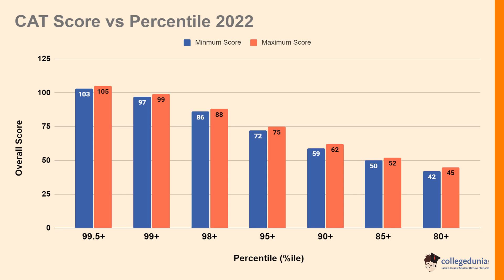Let's check the CAT score versus percentile in 2022. For the 99.5+ percentile, the minimum score was 103 and the maximum score was 105. For the 99+ percentile, the minimum score was 97 and the maximum score was 99. For the 98+ percentile, the minimum score was 86 and the maximum score was 88. For the 95+ percentile, the minimum score was 72 and the maximum score was 75.